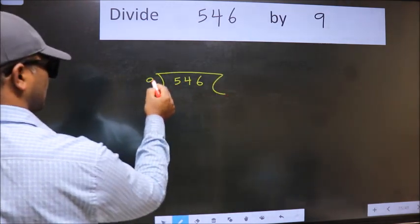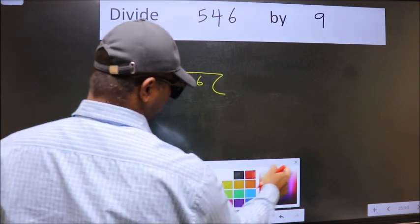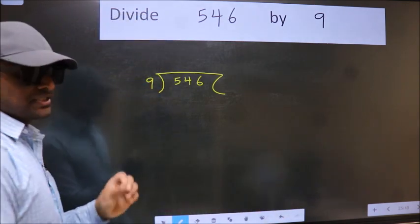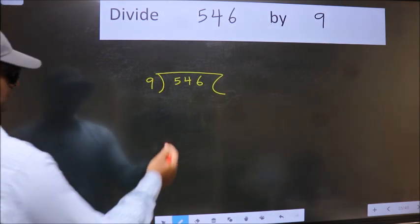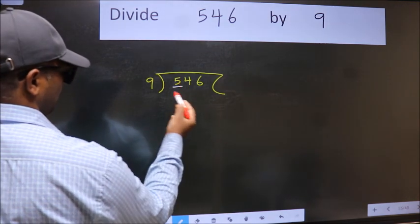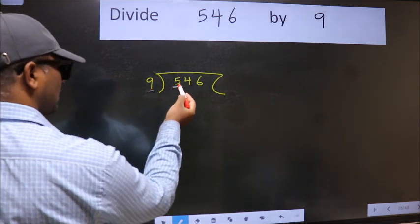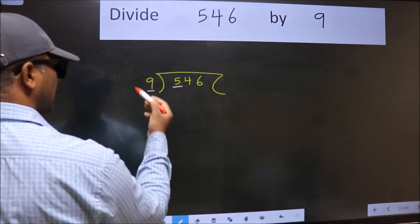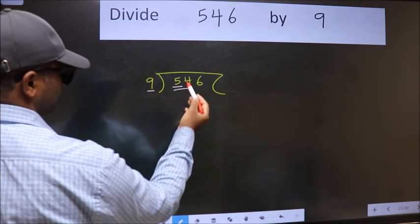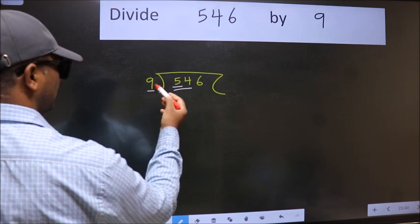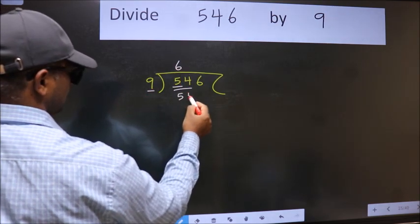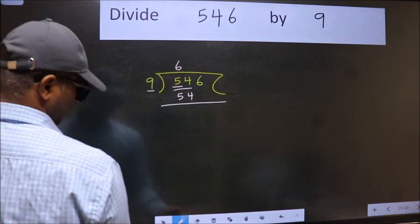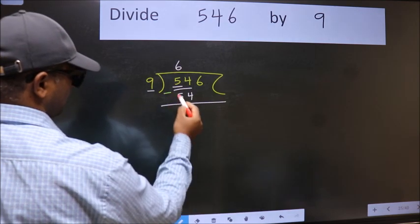9 here, this is your step 1. Next, here we have 5 and here 9. 5 is smaller than 9, so take two numbers: 54. When do we get 54 in 9 table? 9×6=54. Now we should subtract, we get 0.